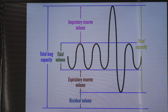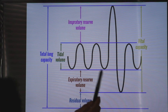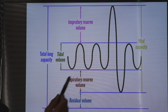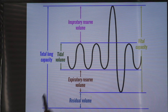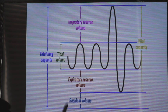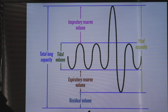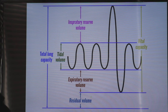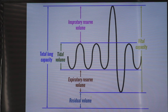To summarize the values: tidal volume is 500 cc, inspiratory reserve volume is 3000 cc, expiratory reserve volume is 1100 cc, and residual volume is approximately 1200 cc. The functional residual capacity is the addition of the expiratory reserve volume and the residual volume. At the end of your expiration, the volume remaining in the lung is the functional residual capacity.